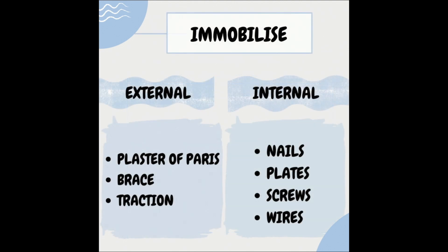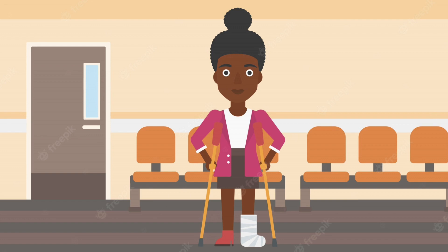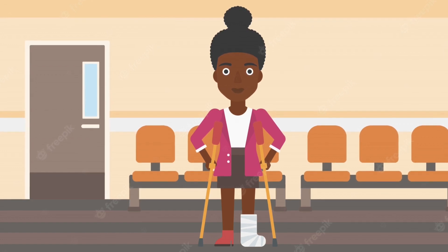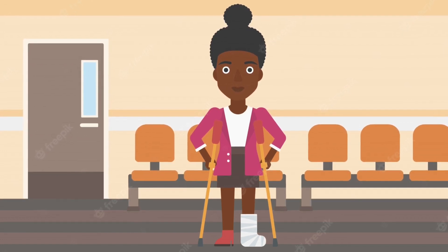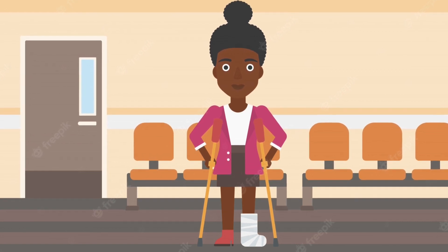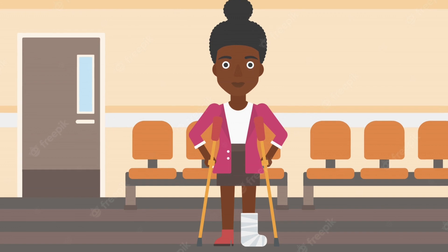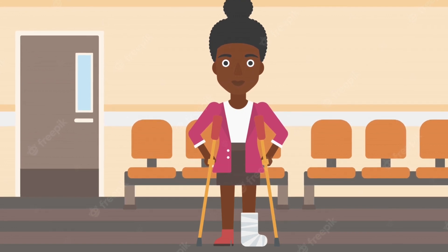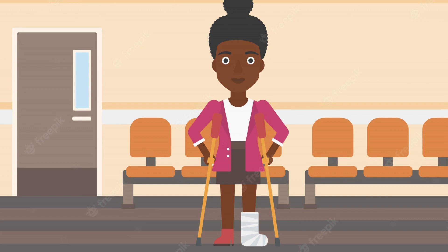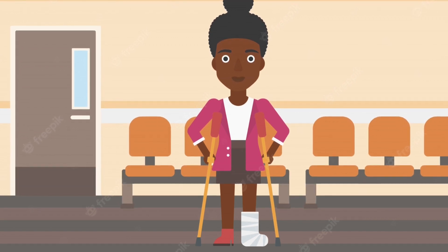This takes us to step number four, which is immobilization. We immobilize the fracture to maintain reduction and promote corrective healing. This is done in the form of external or internal fixation, and both of these are done in surgery. After internal fixation, there can be further external immobilization to keep the area stable for optimal healing. This includes traction or bracing, a back slab, or a circular cast with plaster of Paris — known to the public as cement. It is important to remember that we must immobilize the joint below and the joint above a fracture for optimal healing.